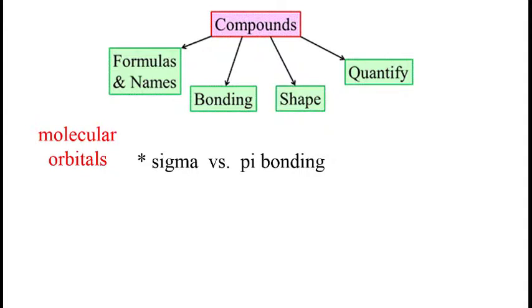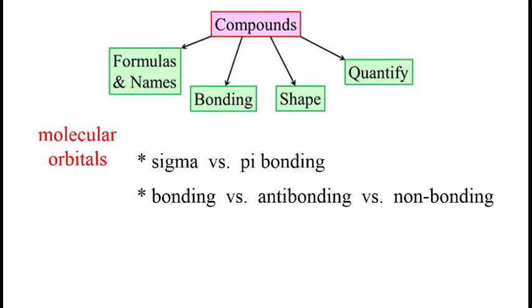There are also orbital interactions that are anti-bonding and non-bonding, so we'll explore the difference. As we know, energy is a big part of this course, so much like we did with atomic orbitals, we will construct energy level diagrams for the molecular orbitals. This will give us another way to find the bond order of a bond.